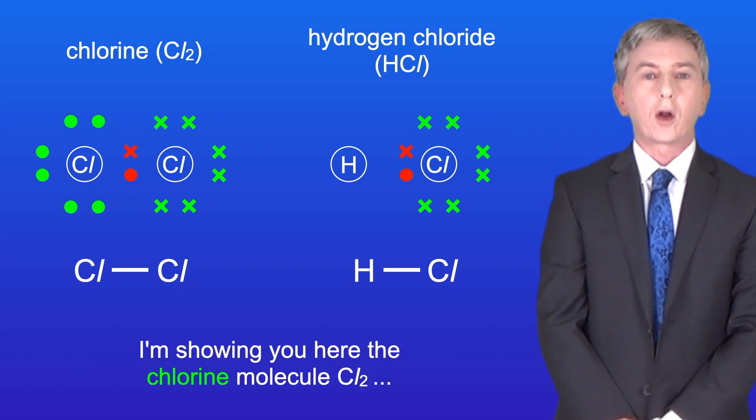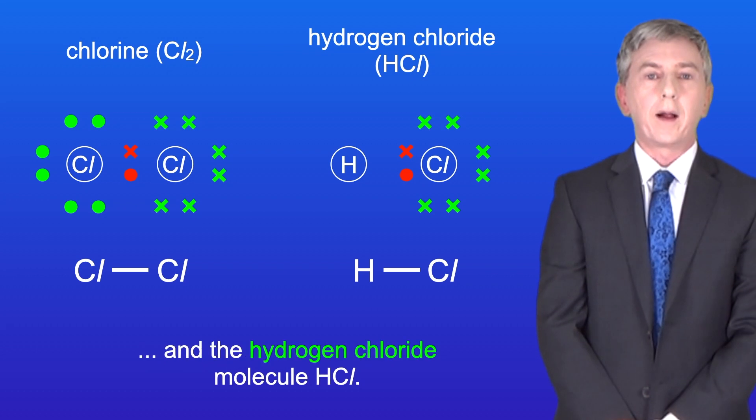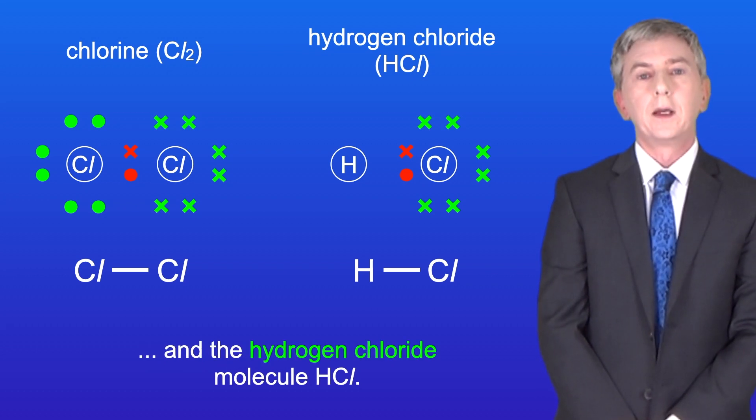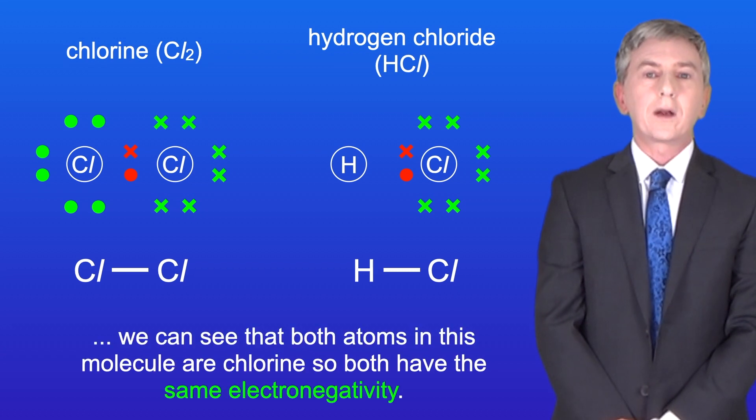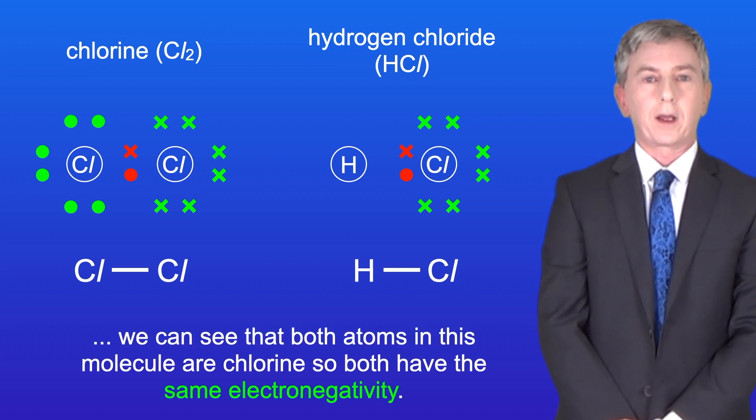I'm showing you here the chlorine molecule Cl2 and the hydrogen chloride molecule HCl. Looking at the chlorine molecule, we can see that both atoms in this molecule are chlorine, so both have the same electronegativity.